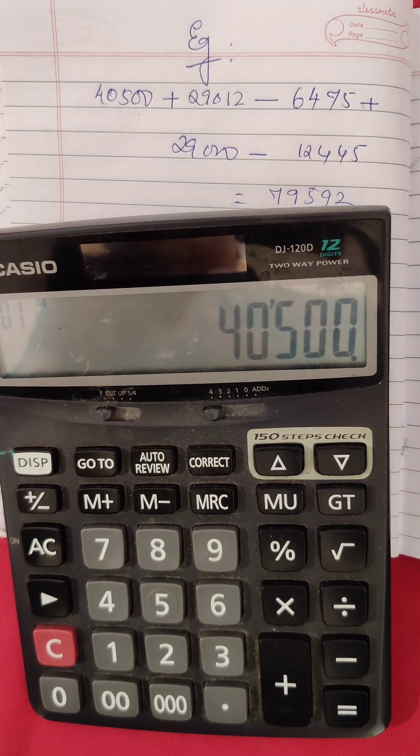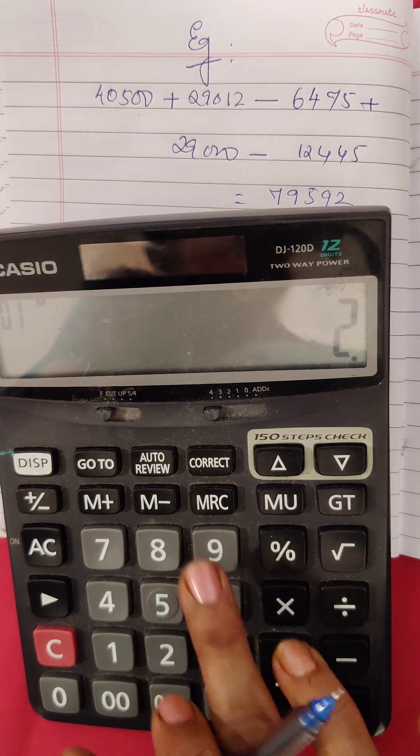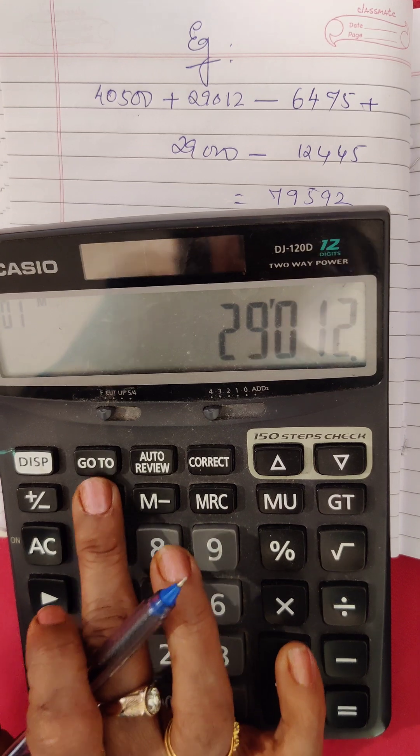Next, you have to add 29,012 to this. So you will do 29,012 and again put it in memory plus.